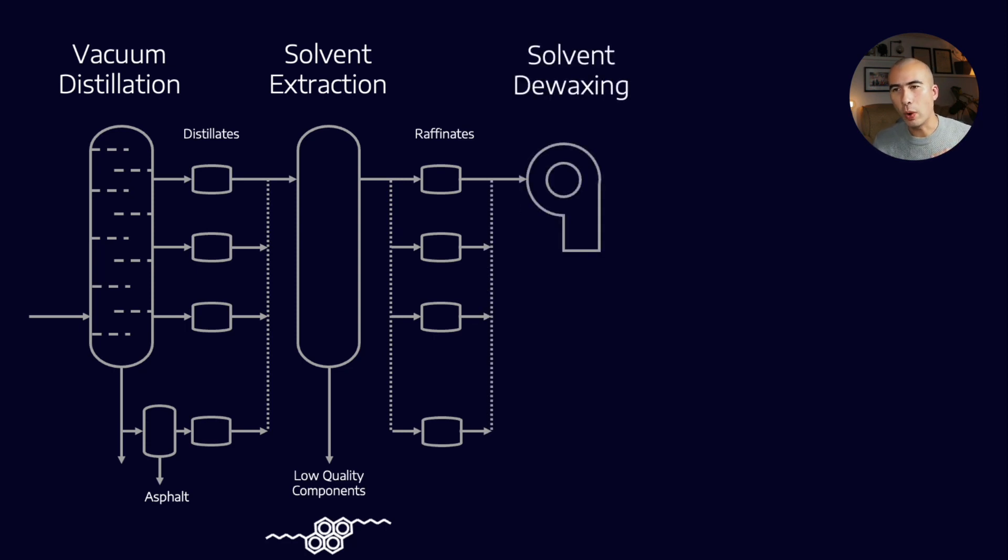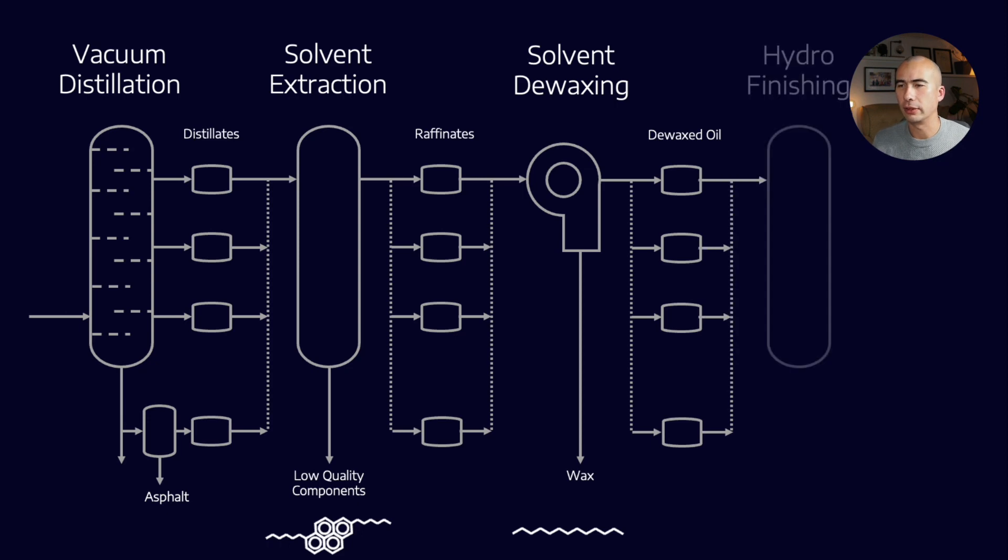After that, we go through a solvent de-waxing process. We're using a solvent which has a preference for straight-chain paraffins. So when we do this, we're able to then, with something like a toluene for example, pull out the straight-chain paraffins. Now we have a product which has very little aromatic content, very little wax content.